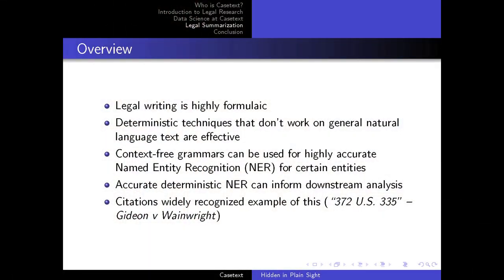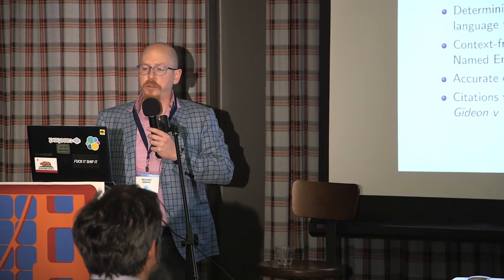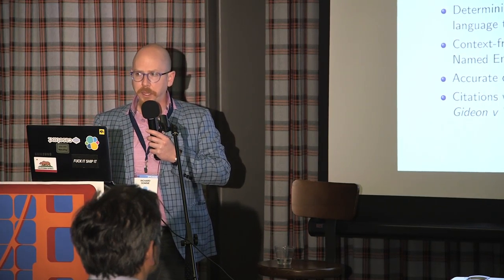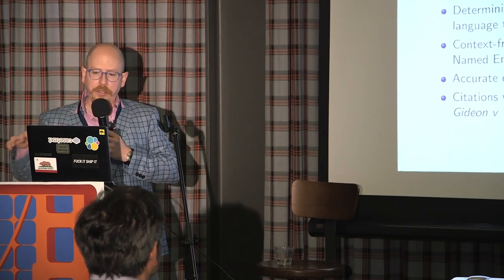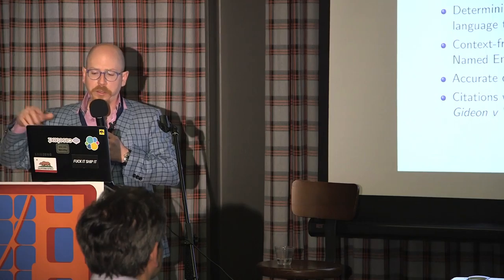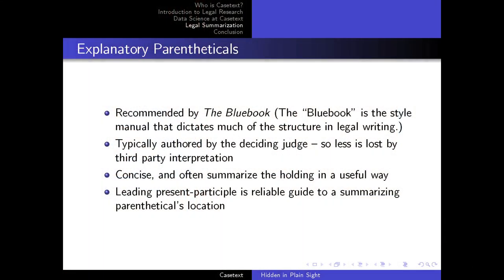One great thing about working with the law is that it's very deterministic. Most English text is not something you can analyze with a context-free grammar, but the law actually is. This is why reading opinions isn't joyous — it's very formulaic. The Blue Book is the style guide used by lawyers and specifies in great detail what everything has to look like. That's an opportunity to find lots of low-hanging fruit before delving into ML technologies. When you've found tons of stuff with high confidence using deterministic methods, you have enormous scaffolding to build an ML approach on — you know where the citations are, what the citation graph looks like, where jurisdictions are. You're already miles ahead of just using word2vec or any other general technique.